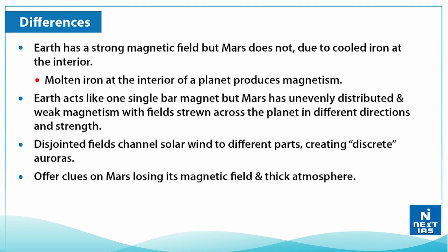Earth acts like one single bar magnet, but Mars has unevenly distributed and weak magnetism, with fields strewn across the planet in different directions and strengths. These disjoint fields channel the solar wind to different parts of Mars, creating discrete auroras, and offer clues on Mars losing its magnetic field and thick atmosphere.